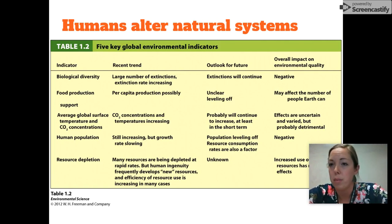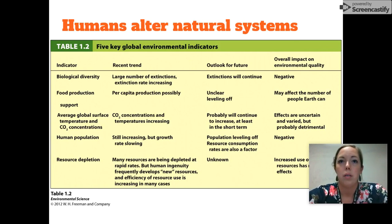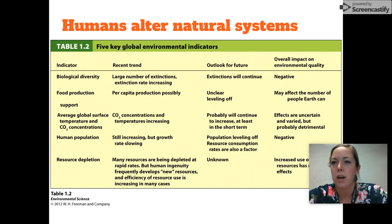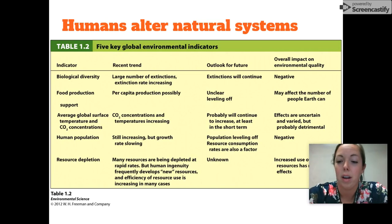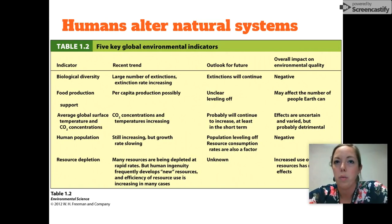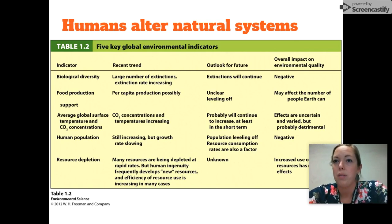We have changed the chemistry of our air, our soil, our water — sometimes intentionally, like when we add fertilizers to the soil — but also unintentionally, as a consequence of activities that generate pollution. Even where we don't intend to manipulate the environment directly, the simple fact that we are so abundant — there are 7.7 billion of us — really does affect our surroundings.